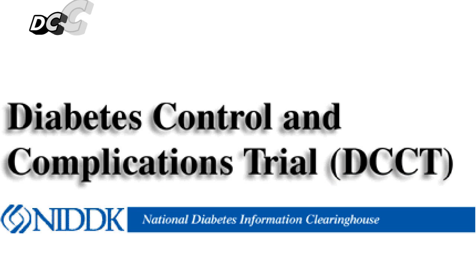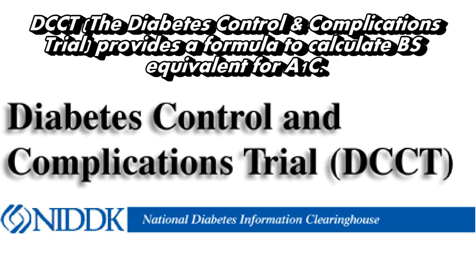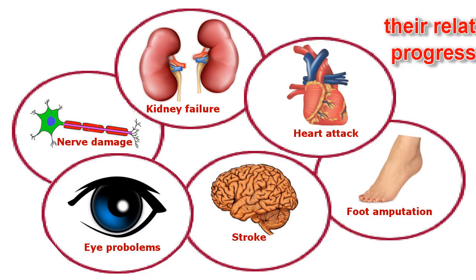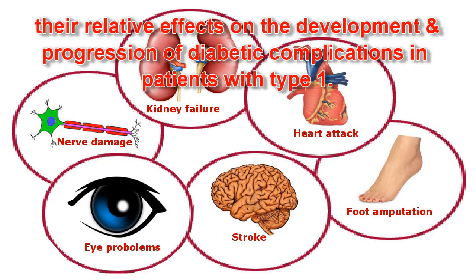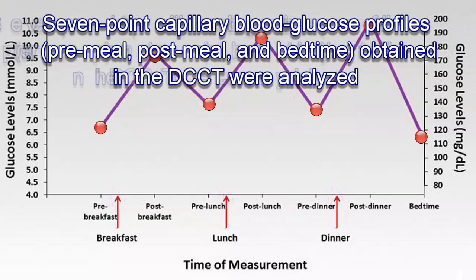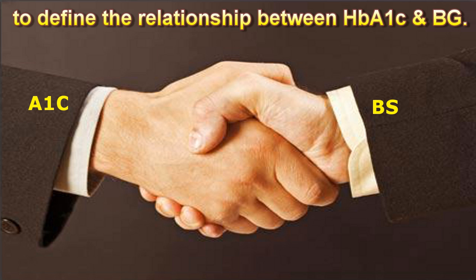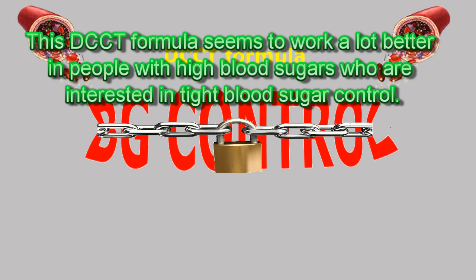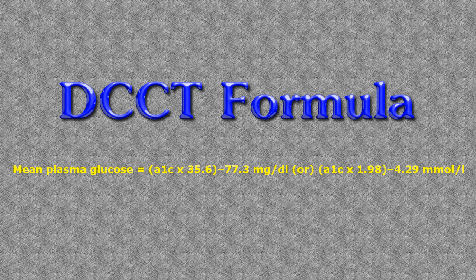DCCT — The Diabetes Control and Complications Trial — provides a formula to calculate blood sugar equivalent for A1C. DCCT is a randomized clinical trial designed to compare intensive and conventional therapies and their relative effects on the development and progression of diabetic complications in patients with type 1 diabetes. Seven-point capillary blood glucose profiles — pre-meal, post-meal, and bedtime — were analyzed to define the relationship between HbA1C and blood glucose. This DCCT formula seems to work better in people with high blood sugars who are interested in tight blood sugar control. Mean plasma glucose = (A1C × 35.6) − 77.3 mg/dL, or (A1C × 1.98) − 4.29 mmol/L.